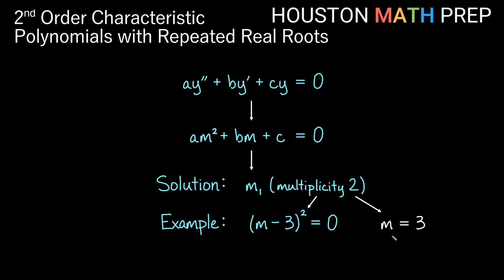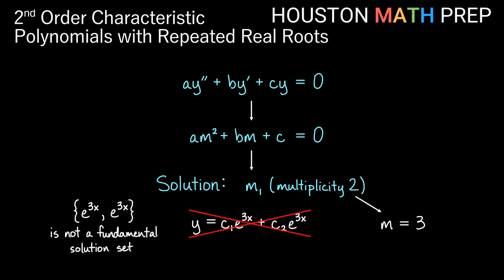Say we get m = 3. We need a fundamental solution set with two functions of x, so we might guess y = c1·e^(3x) + c2·e^(3x). The problem is that e^(3x) and e^(3x) cannot be a fundamental solution set — a fundamental solution set must be linearly independent, and these are constant multiples of one another. So we need another method.